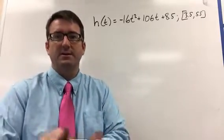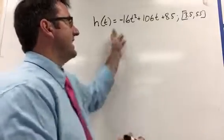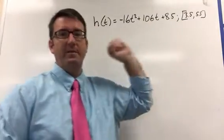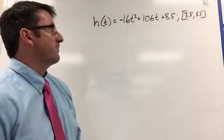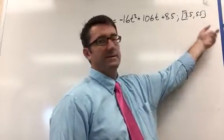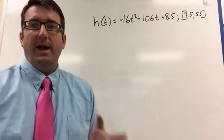Distance divided by time is going to give us our speed. So what it's asking for here is the average rate of change over the interval from 3.5 seconds to 5.5 seconds.